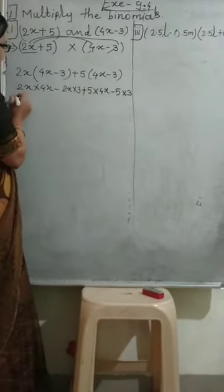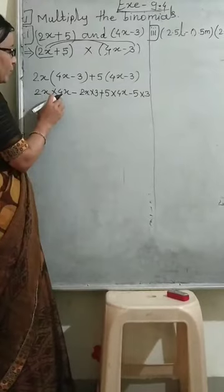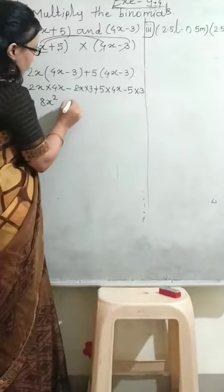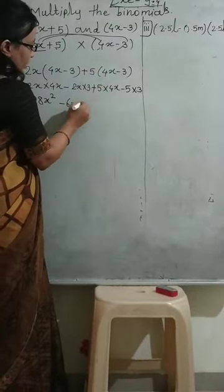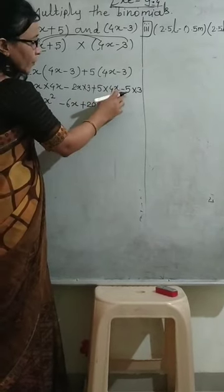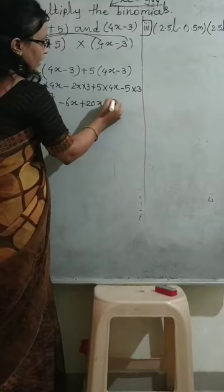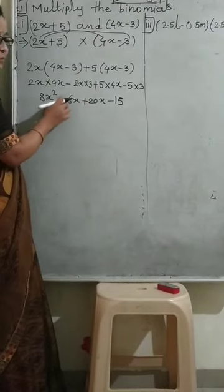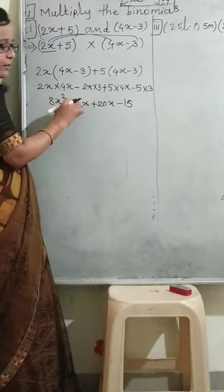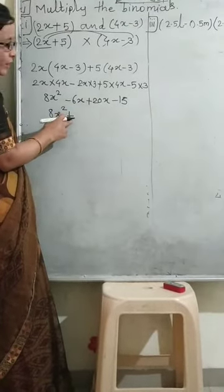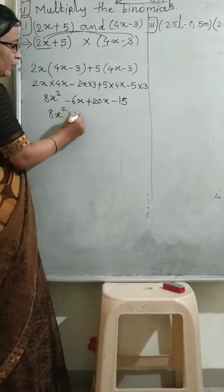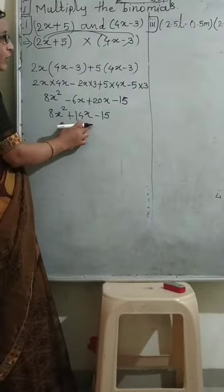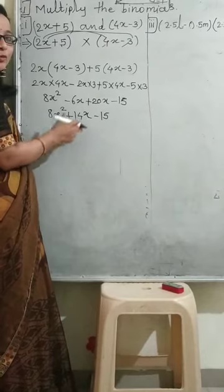Now 2x into 4x minus 3, then plus 5 into 4x minus 3. By 2x we multiply to the bracket: 2x into 4x, then 2x into minus 3, then plus 5 into 4x, then plus 5 into minus 3. That gives us: 2 times 4 is 8, x times x is x squared, so 8x squared. Minus: 2 times 3 is 6, so minus 6x. Then 5 times 4 is 20, so plus 20x. Minus: 5 times 3 is 15, so minus 15.